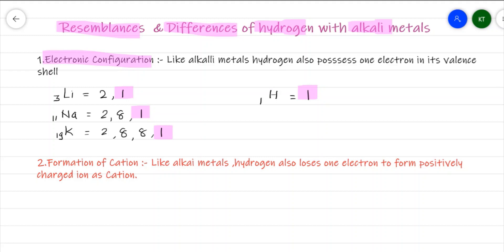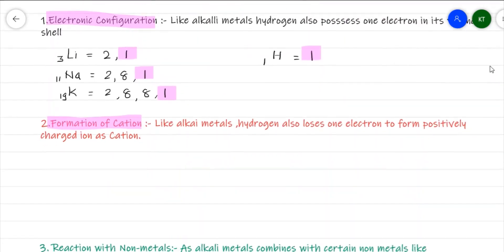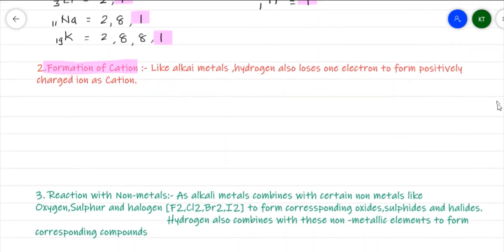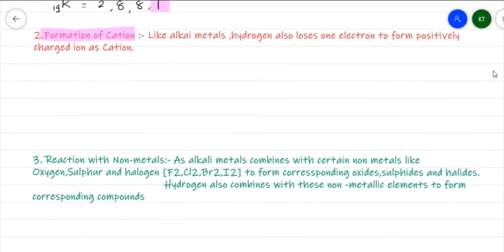The second point of similarity is the formation of cations. Just like alkali metals, hydrogen also shows a tendency to lose an electron and form a positively charged ion.